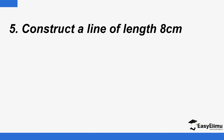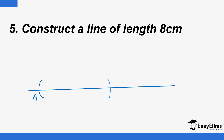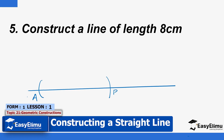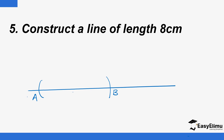Construct a line of length eight centimetres. The rule is the same: draw a line, make a mark on one end and call it A. Using A as the centre, measure eight centimetres, make an arc that way, and call it B. Then indicate eight centimetres on the line.